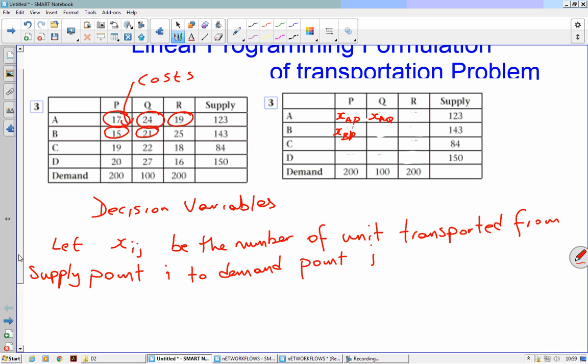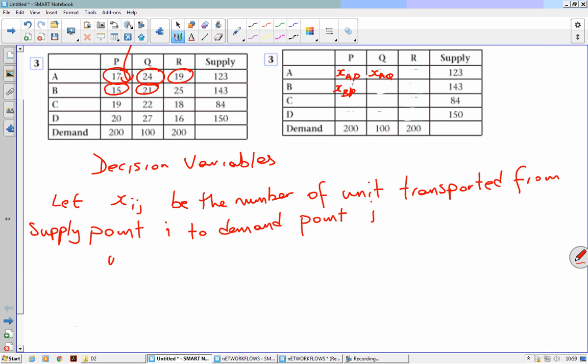Where i is a member of... one of these: A, B, C, D. You do need to list them all. And j is a member of these: P, Q, and R.